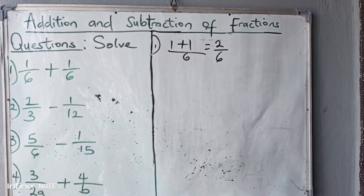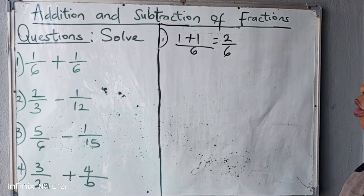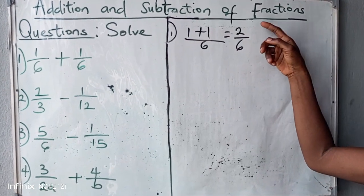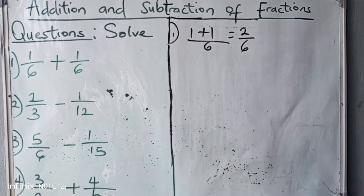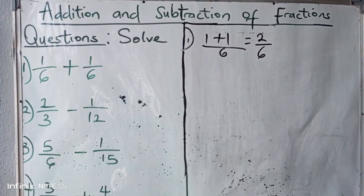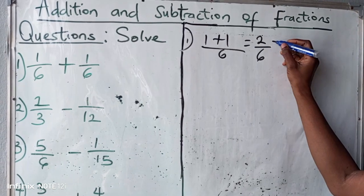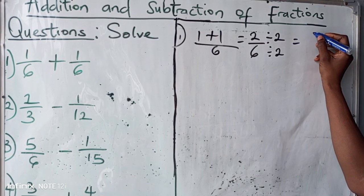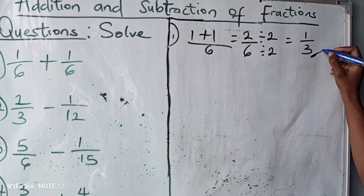We cannot leave our answers like this because it's yet to be in its lowest form. So what we do is to look for a number that would successfully divide both of them without remainder. And our answer is two because two is an even number and is the lowest. So two divided by two, six divided by two also, we have one all over three.